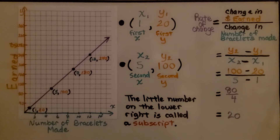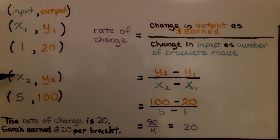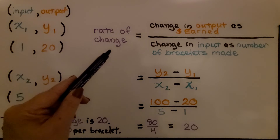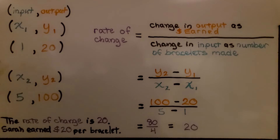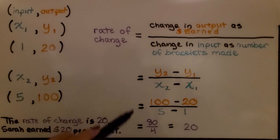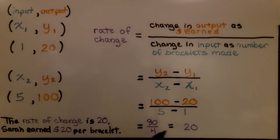We get 80 over 4, which simplifies to 20, so the rate of change is 20. The x is our input and the y is our output. For x₁ = 1 and y₁ = 20, and x₂ = 5 and y₂ = 100: the change in output is 100 minus 20 = 80, the change in input is 5 minus 1 = 4, giving us 80 to 4, which simplifies to 20.